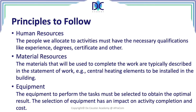Equipment. The equipment we will be using to perform the tasks must be selected to obtain an optimal result. A good selection of equipment has an impact on activity completion and cost. It's very important to look at these different elements to find the best mix. Overqualified or underqualified people may lead to problems. Material resources that are too expensive or have lower quality will have an effect on the result. And of course there is also the equipment — we have to have equipment that is adjusted to do the work. Good equipment will help you do the work faster, with higher quality and fewer problems.